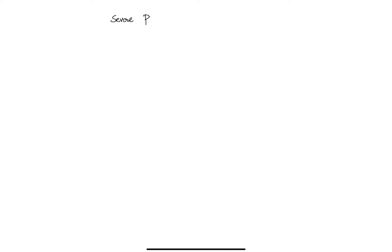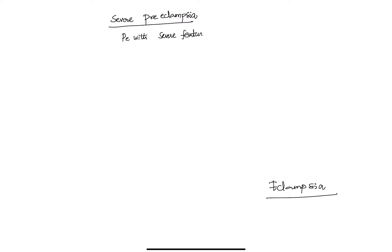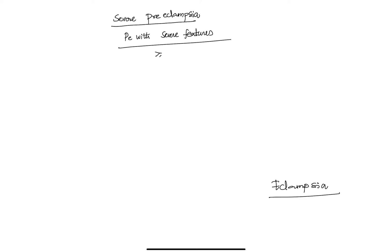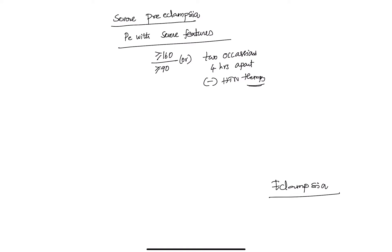Are there other definitions to cover? Yes — what is severe preeclampsia and what is eclampsia? We are no longer calling it severe preeclampsia; we now call it preeclampsia with severe features. The BP cutoff is very important: more than or equal to 160 systolic OR more than or equal to 90 diastolic — the OR is very important. This must be recorded on at least two occasions, four hours apart, and the patient must not be on antihypertensive therapy.